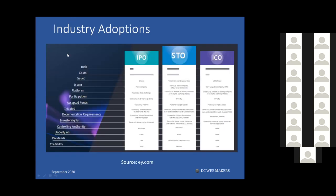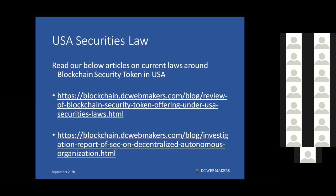This comparison slide — sourced from Ernst & Young's website — shows the differences between IPO, STO, and ICO across various characteristics such as risk, cost, issuers, platform, participation, accepted funds, documentation requirements, investor rights, controlling authority, underlying assets, dividends, and credibility. You can come back to this slide to compare these three different fundraising mediums.